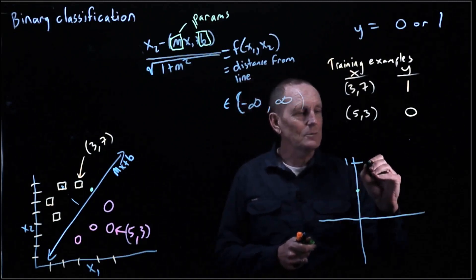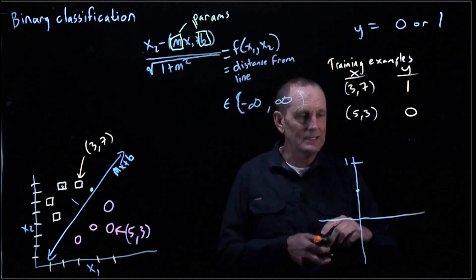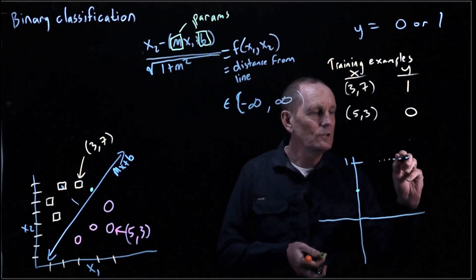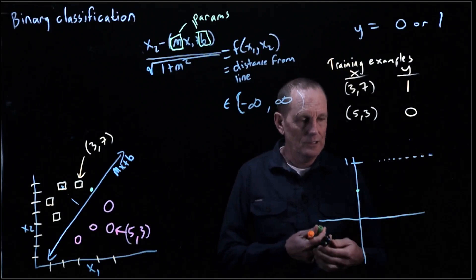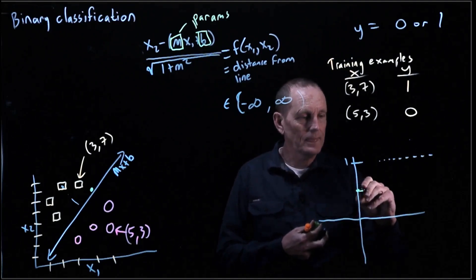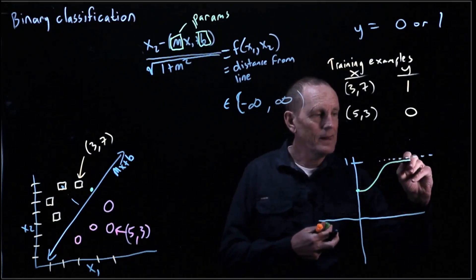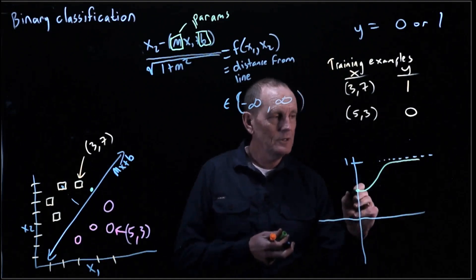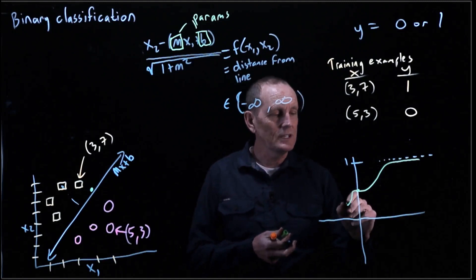And then it's going to asymptote at 1 as x approaches positive infinity. And it's going to asymptote at 0 as x approaches negative infinity.